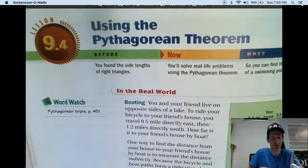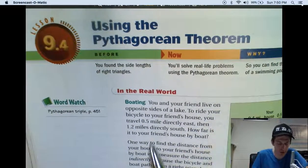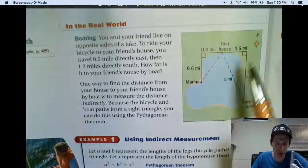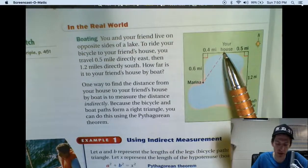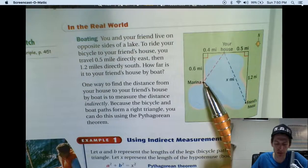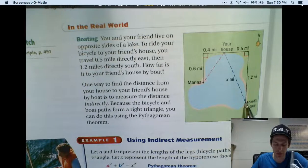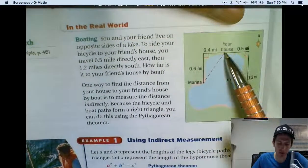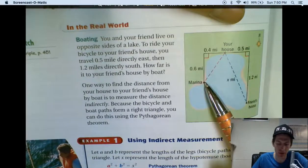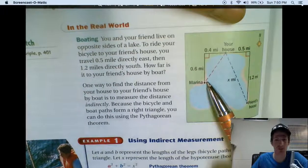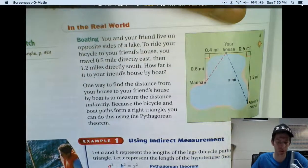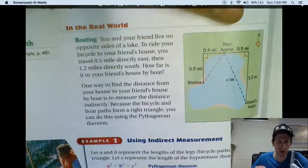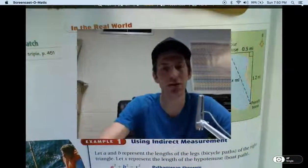All right, using the Pythagorean theorem. This little section right here is kind of interesting, so check this out. Let's say that you live on a lake. Your house is right here. The boat marina is over here, and your friend's house is over here.